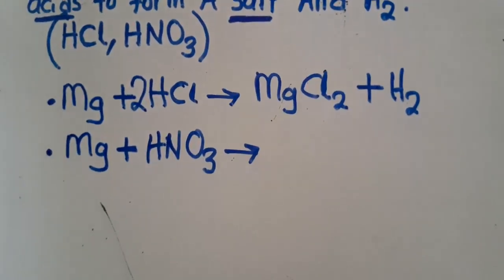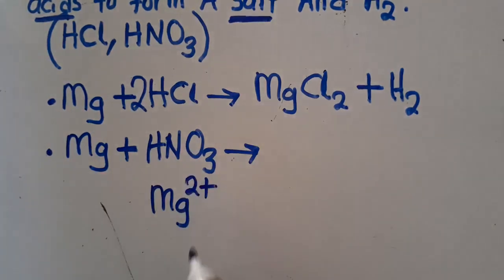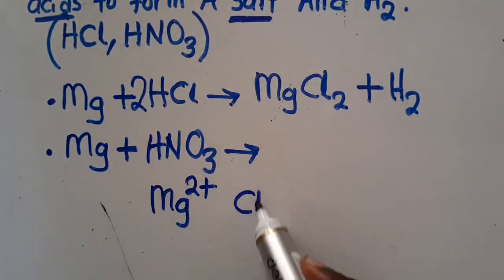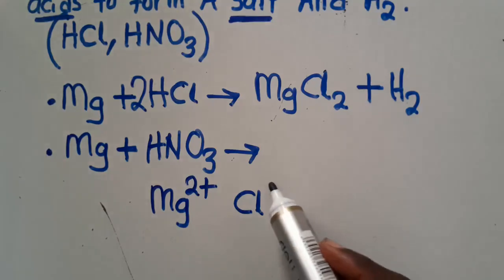Group 2 elements — for them to be stable, they must lose 2 electrons. That is one of their properties. Losing electrons attracts a positive charge. Chlorine is in group 7 of the periodic table. All elements in group 7 need to gain 1 electron to be stable, because they have 7 electrons in their outermost shell. So chlorine gaining 1 electron attracts a negative charge.